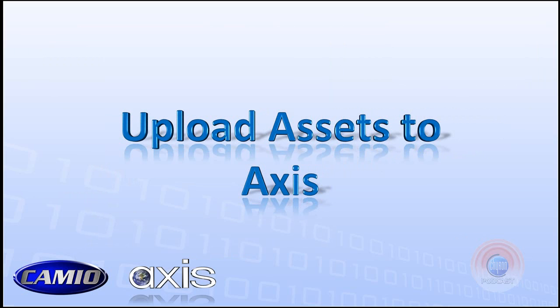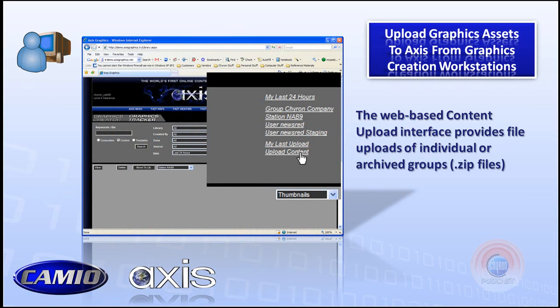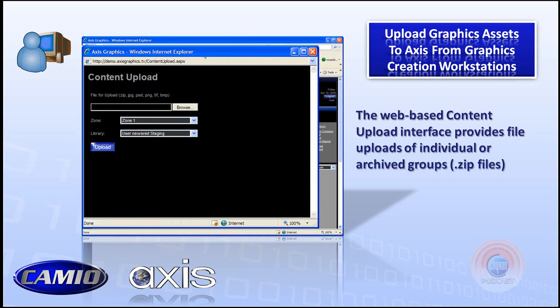We also have to talk about how we upload assets to the Access newsroom system. Access is really a web page. We log into Access, then locate the Upload Content button — access is defined based on user permission sets. By clicking the Upload Content link, that brings up a separate window for content upload. Items can be uploaded in individual formats: JPEGs, PNGs, Photoshop files, TIFFs, bitmaps, as well as an archive group — in other words, a zip file that may contain multiple files.